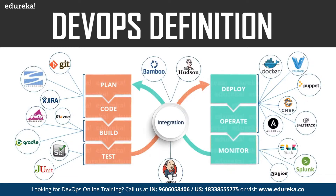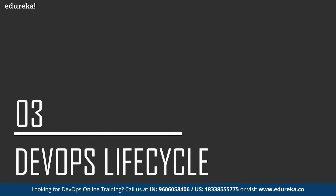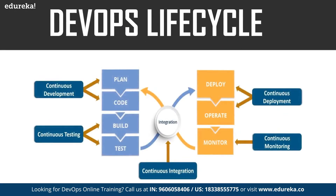As you can see in this diagram, these are the various tools that are used in DevOps. Now let us have a look at the DevOps lifecycle. These are the various phases: continuous development, continuous testing, continuous integration, continuous deployment and continuous monitoring. Let us have a look at each of these phases one by one.